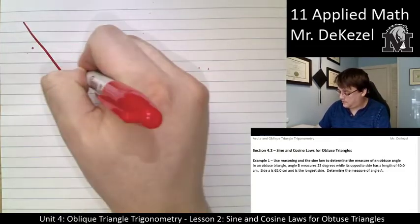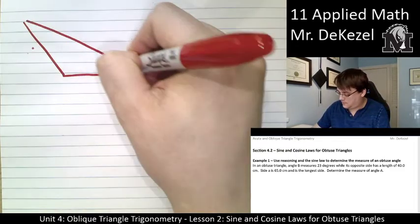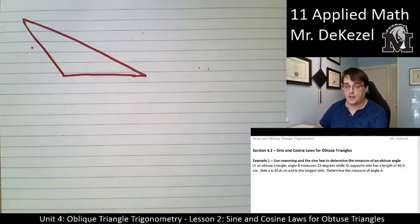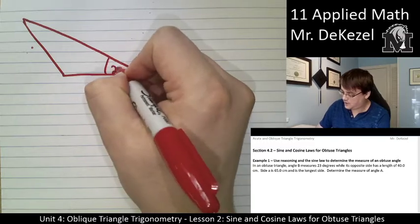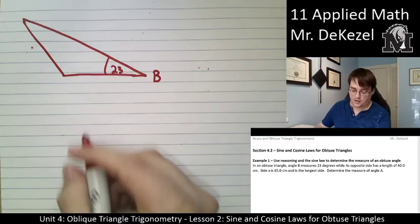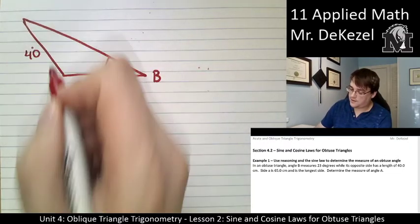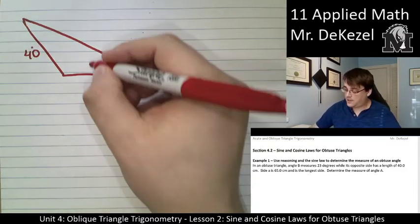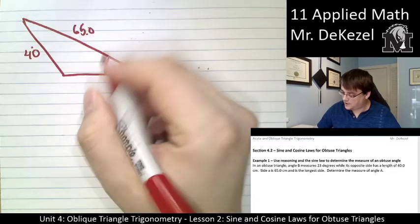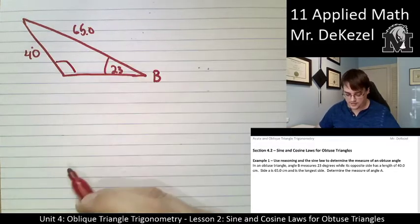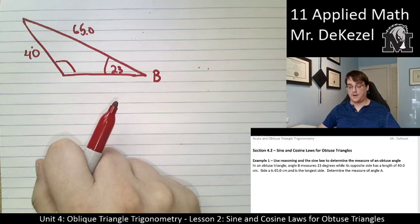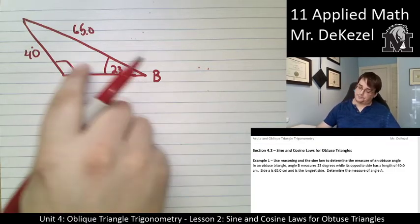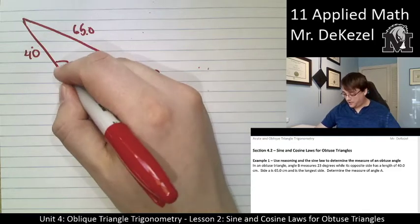Let's just draw the generic triangle and start to fill it in. That is a generic obtuse triangle. It says we have angle B, and it's 23 degrees. And across from it is 40 centimeters. We now have 65 centimeters here and an obtuse angle. And the obtuse angle is what we want to find. So I see sine law written all over this as we have a pair and we have the opposite of our unknown.